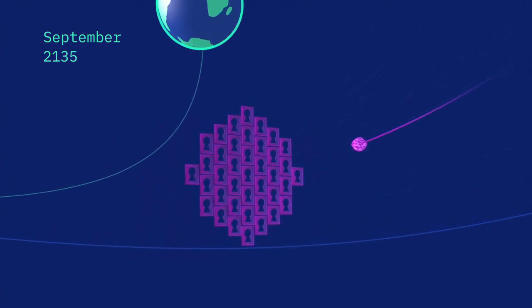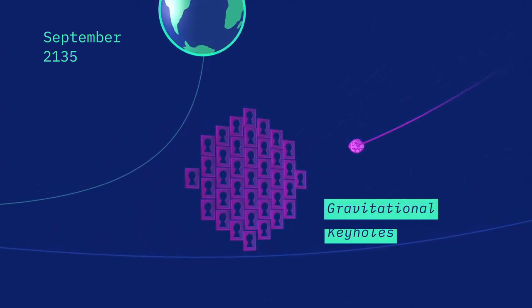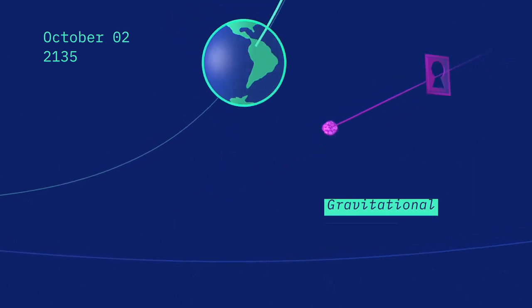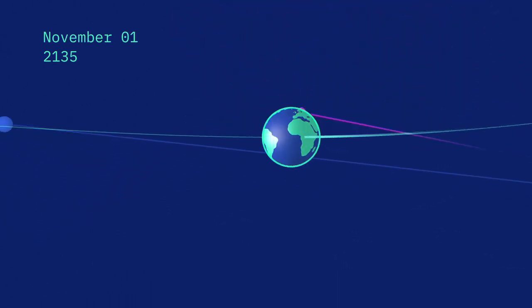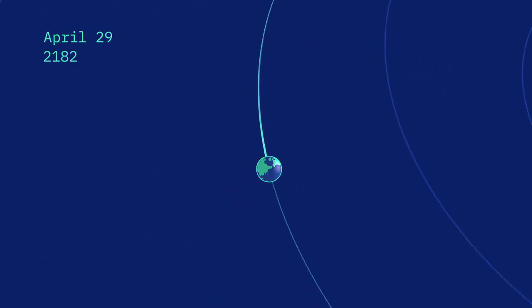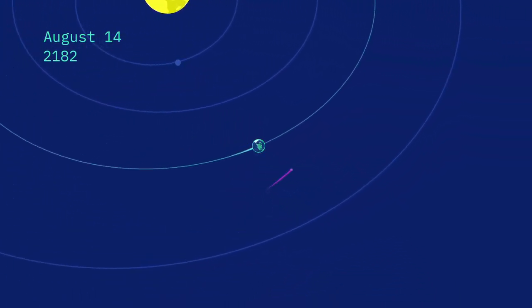A few of these trajectories line up with regions of space called gravitational keyholes. If Bennu were to pass through a keyhole, Earth's gravity would bend its path in just the right way to cause an impact on a subsequent orbit.